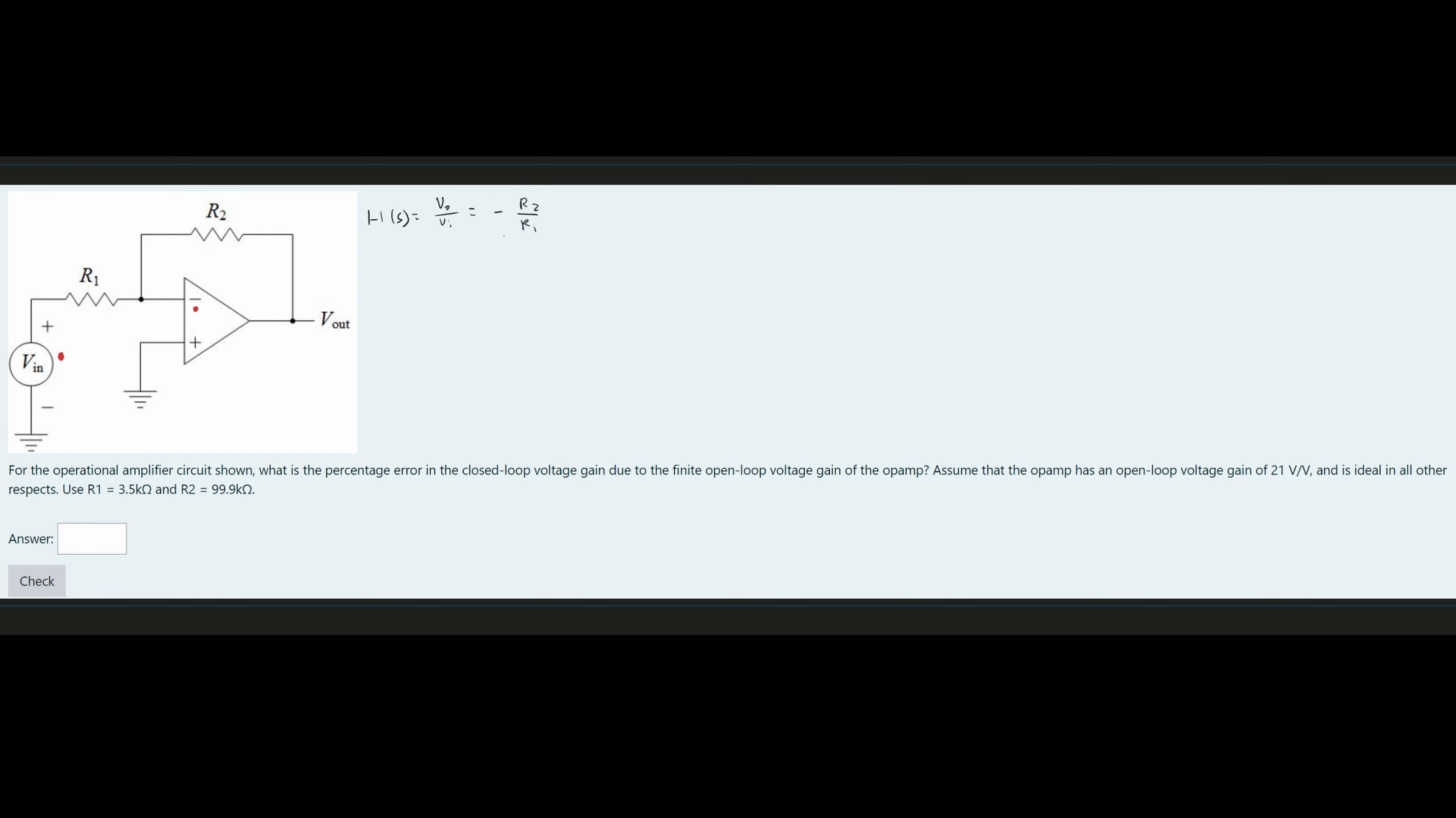But this is standard, and we know this. So we are going to use this, and that means we are going to plug in our resistor values. We're going to have 99.9 divided by 3.5. The kilo ohms are going to cancel out. And this is going to give us a value of 28.54, approximately. And this is going to be our ideal value.